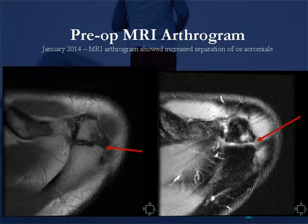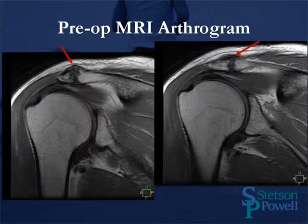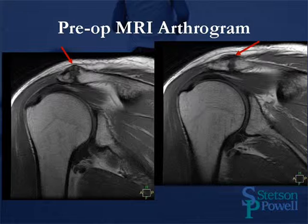Here we see the pre-op MRI arthrogram. The os acromiale, or mesoacromiale in particular, is seen with the red lines. The pre-op MRI arthrogram coronal views also show the os acromiale, or the mesoacromiale, evidenced by the red lines.